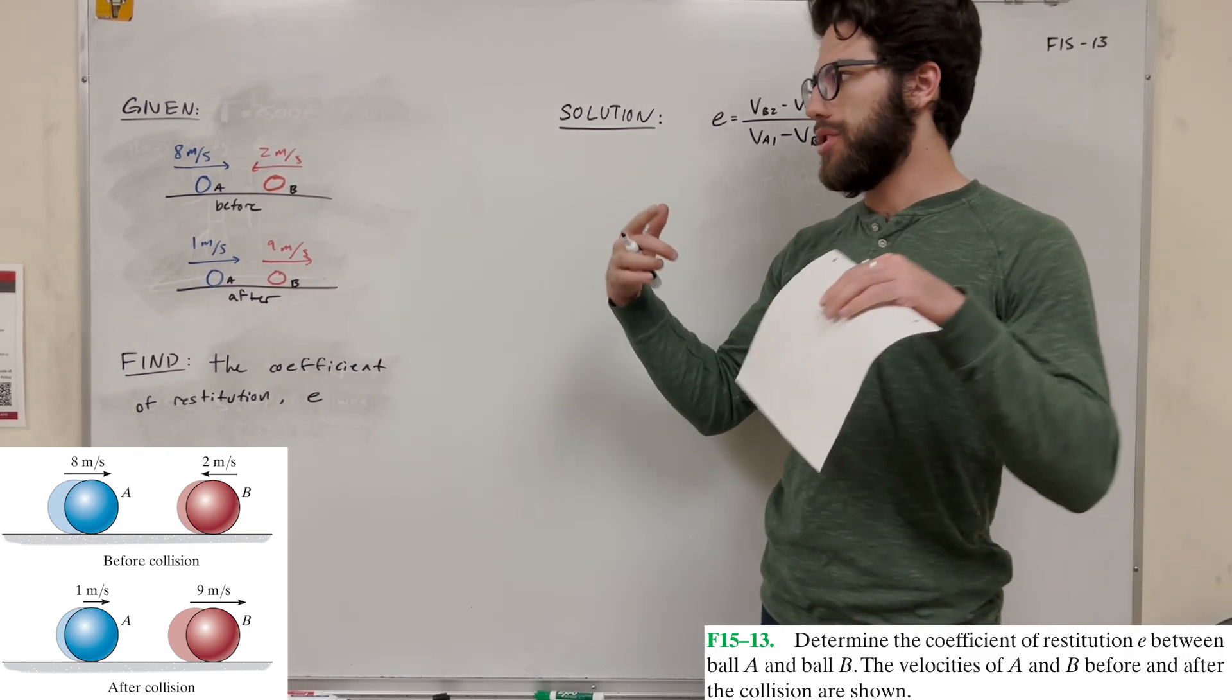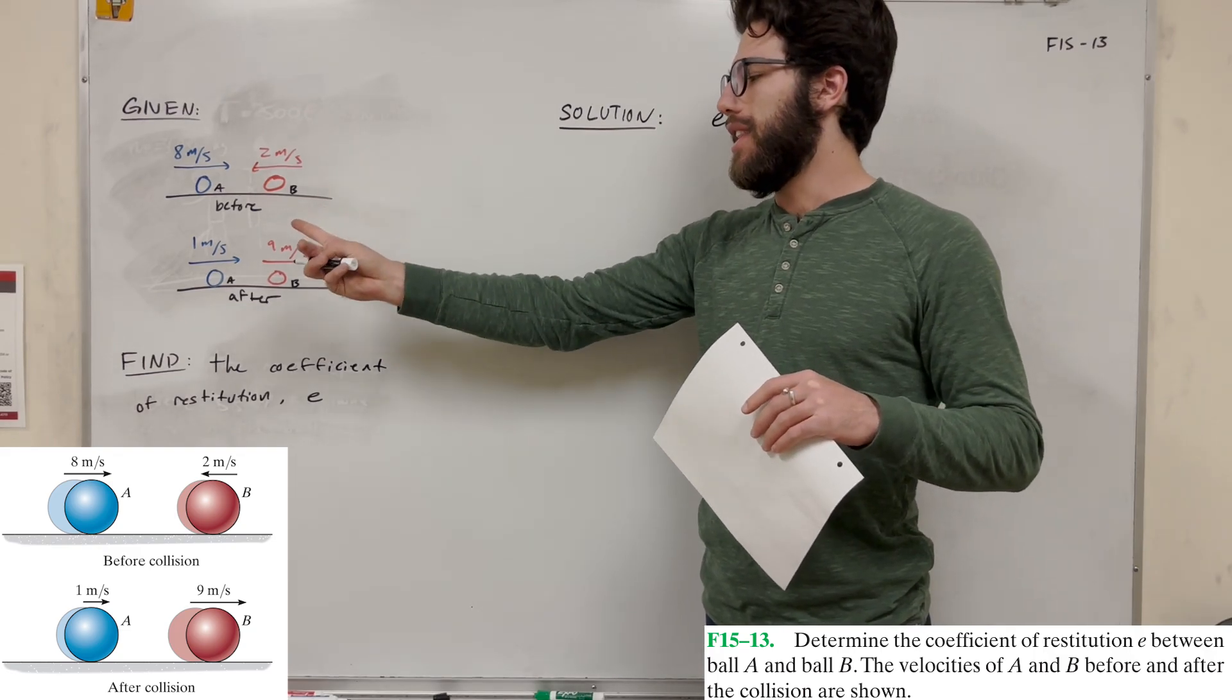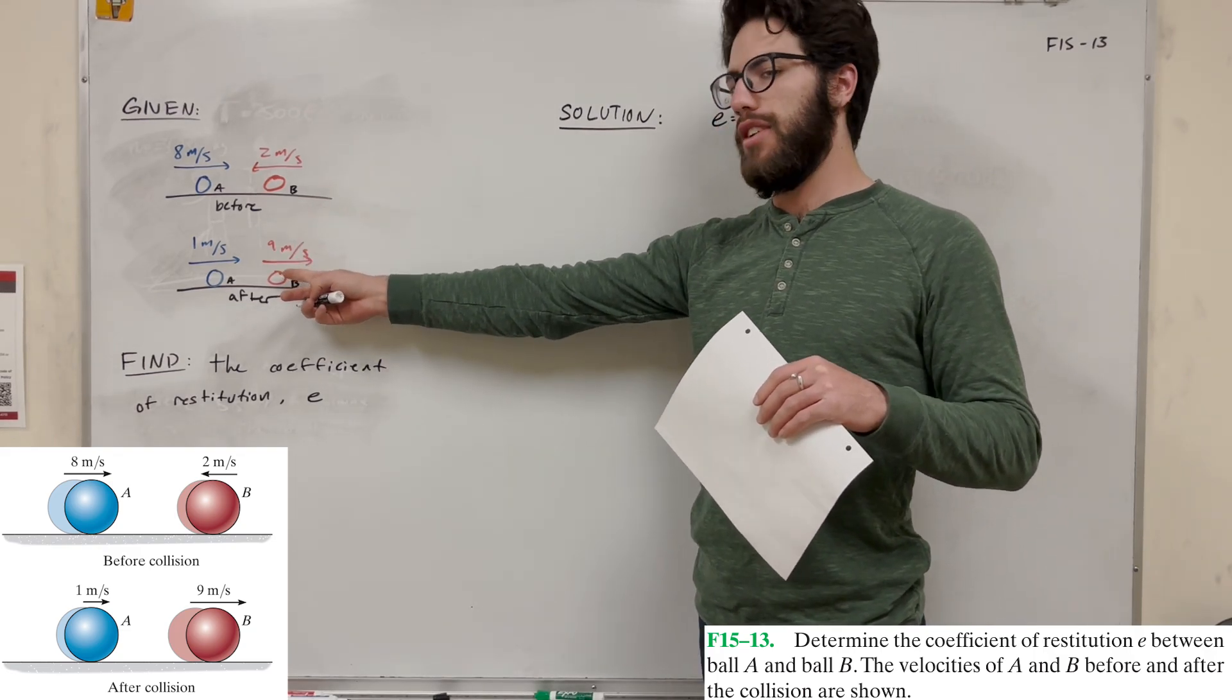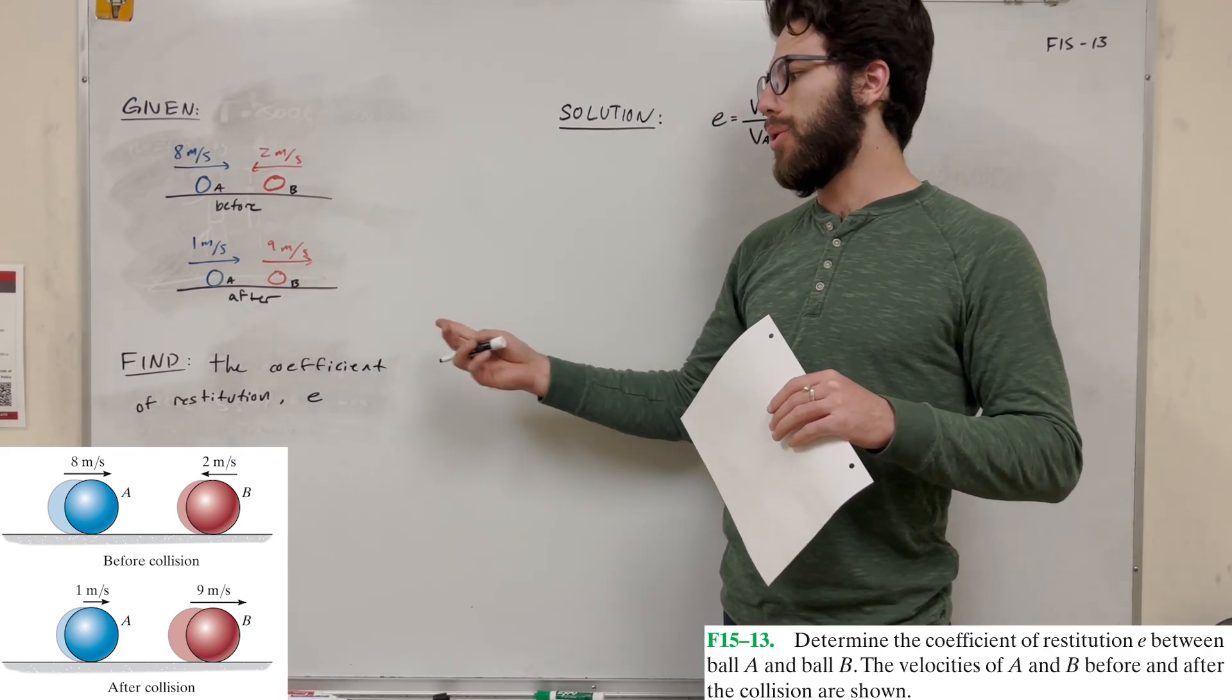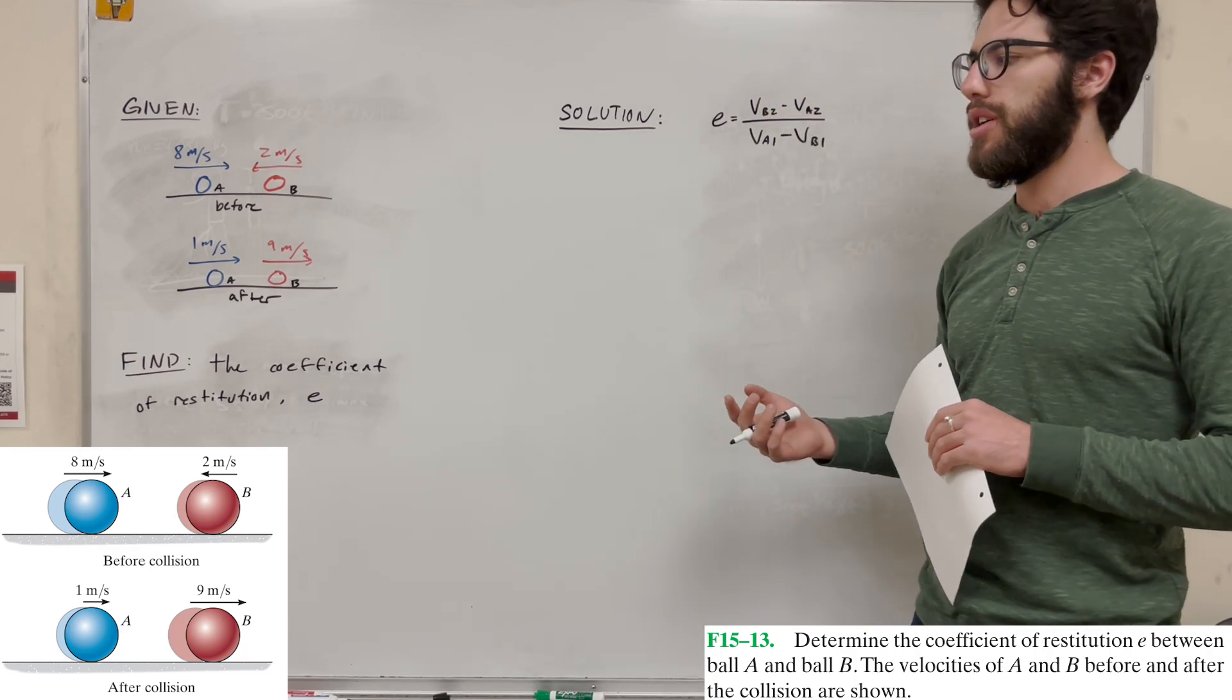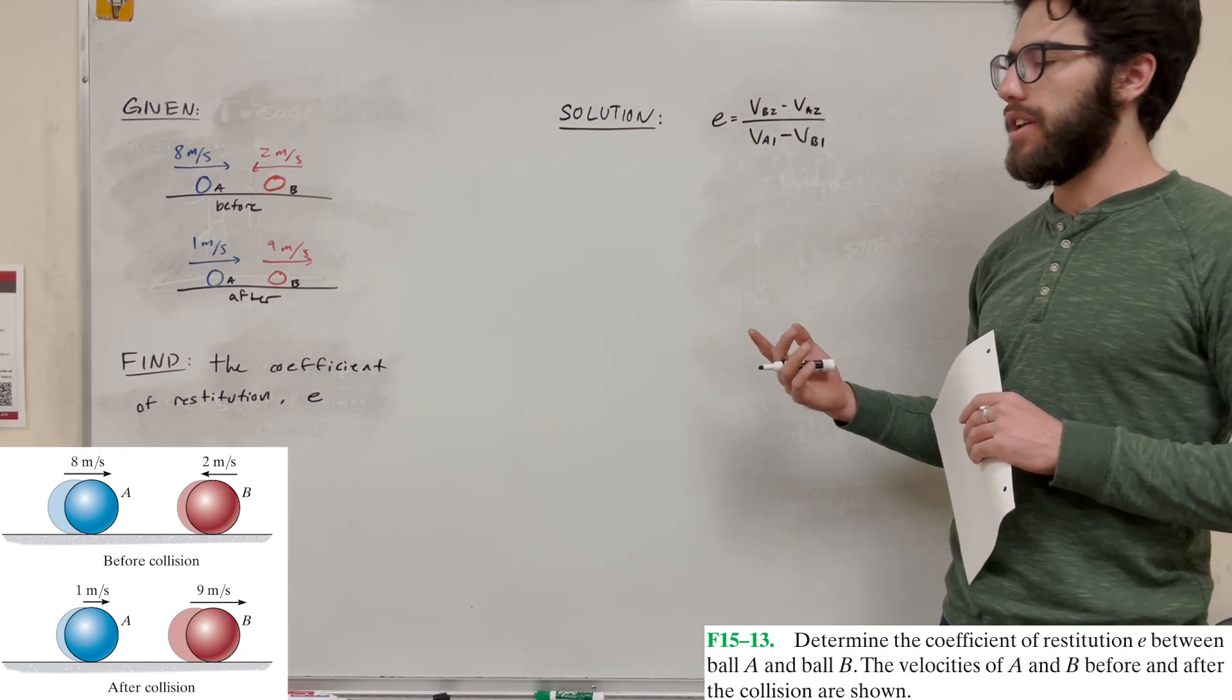So we're given two balls. They're coming towards each other at these velocities. Then they have an impact, and then they leave with these two velocities. So our goal is to find the coefficient of restitution, which is e. So let's solve it.